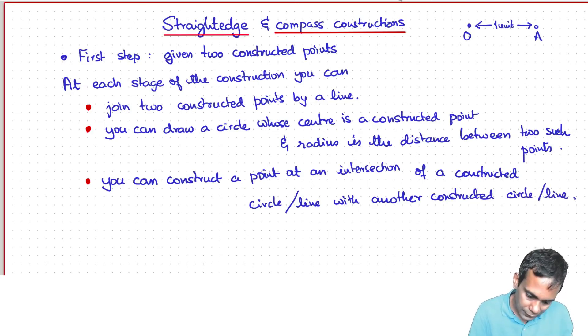So the objects that you're constructing at this stage: if you join two constructed points by a line, this line is constructed. And if you draw a circle whose center is a constructed point and radius is the distance between two such points, then the circle has been constructed. And you can construct a new point by taking the intersection of either two lines or two circles. Well, if you take two circles, you could have two intersection points. You can choose either of them. And you could also take the intersection of two lines.